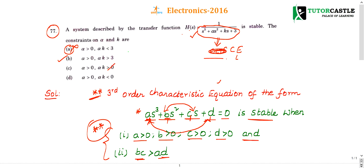It's not zero, it's three. Hence you can eliminate these two, so the right choice is option B. It hardly takes five to ten seconds to do this question if you have knowledge of third-order characteristic equation stability conditions.